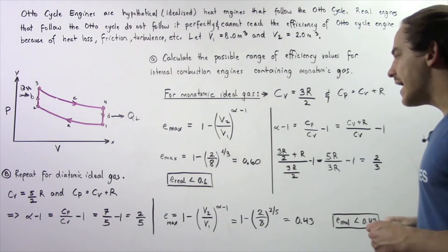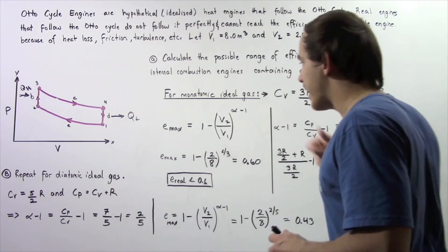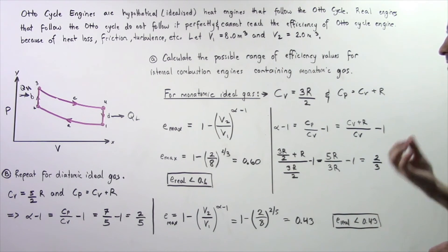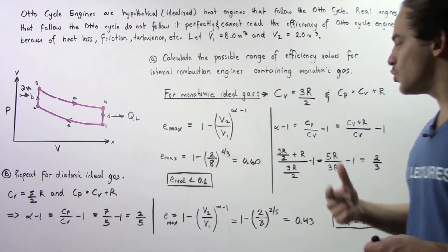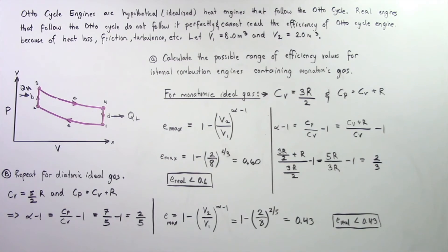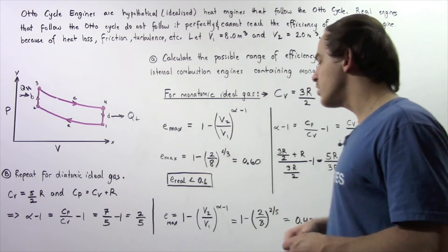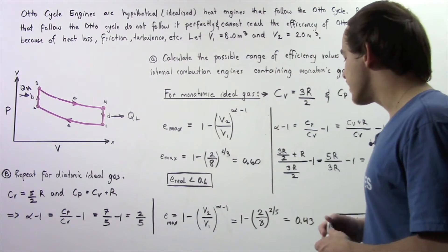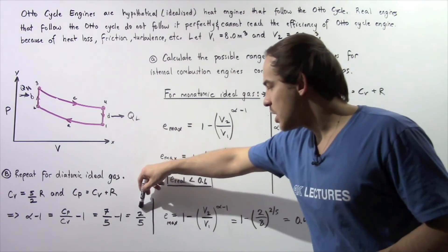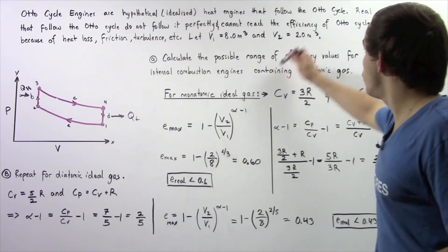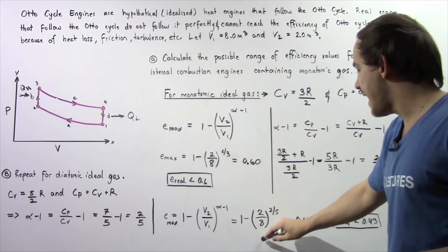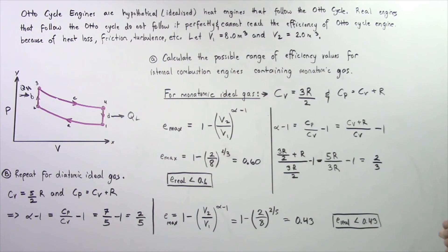Finally we apply this same equation that will give us the efficiency of a perfect Otto cycle engine so Emax is equal to 1 minus the ratio V2 divided by V1 raised to the power alpha minus 1. Now alpha minus 1 is 2 divided by 5 or 0.4 now V2 is 2 and V1 is 8 so this becomes 1 fourth so that means 1 minus 1 fourth raised to the power 2 fifths gives us about 0.43.